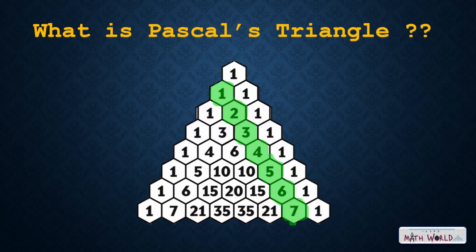The diagonal next to that is the triangular numbers: 1, 3, 6, 10, etc. And so on. There are many other patterns in Pascal's Triangle, but we won't have time to explore them all in this video. If you're interested, I encourage you to explore Pascal's Triangle further on your own.